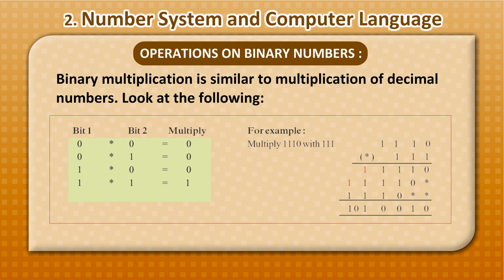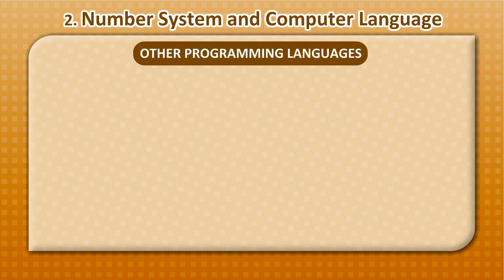Binary multiplication is similar to multiplication of decimal numbers. Look at the following: 0 into 0 equals 0. 0 into 1 equals 0. 1 into 0 equals 0. 1 into 1 equals 1.